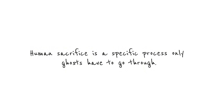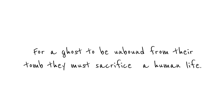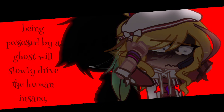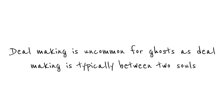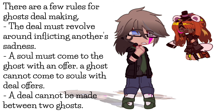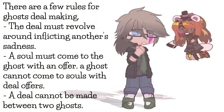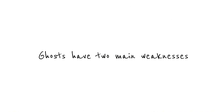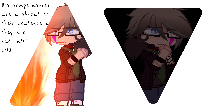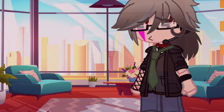Human sacrifice is a specific process only ghosts have to go through. For a ghost to be unbound from their tomb, they must sacrifice a human life — choosing a human who is more miserable than others. Being possessed by a ghost will slowly drive the human insane, causing them to take their own life. Deal making is uncommon for ghosts, as it's typically between two souls, though not completely foreign. Rules for ghost deal making: the deal must revolve around inflicting another's sadness; a soul must come to the ghost with an offer — a ghost cannot come to souls with deal offers; and a deal cannot be made between two ghosts. Ghosts have two main weaknesses: hot temperatures and fear. Fear makes ghosts weaker and can even lead to death. Hot temperatures are a threat to their existence as they are naturally cold and can result in a ghost's death. Ghosts are naturally cold, slightly transparent, and can pick and choose which humans see them.